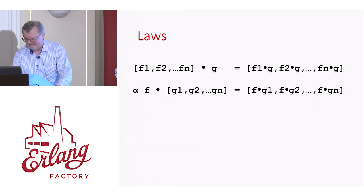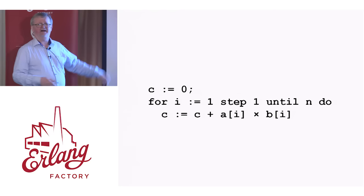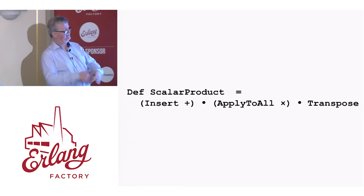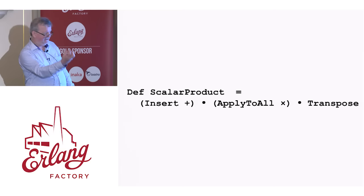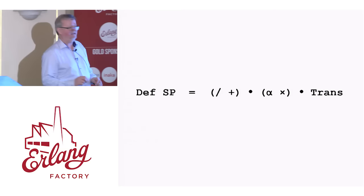Let's look at an example of a program in Backus's language, FP. Here's an ALGOL 60 program for computing the scalar product of two vectors — you can see it's word at a time. We pick one element at a time from each array, multiply them together and add them up. Backus would write this instead as: the scalar product takes a pair of vectors, transposes them into a vector of pairs, applies multiplication to all those pairs, and then adds them up using insert-plus. Insert is what today we call foldr. As I say, this was a landmark paper and had a huge influence on people working in the field.